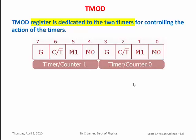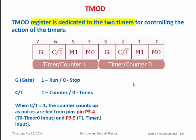Here, G indicates gate. If we set G as 1, the counting or timing operation will start. To stop the operation, store 0 in G. To select the timer or counter, the CT bit can be used. Store 1 to make it a counter, and 0 for making it a timer. When CT is set, the counter counts pulses fed from pins P3.4 and P3.5. Timer 0 is connected to pin P3.4, and Timer 1 is connected to pin P3.5 of the microcontroller.